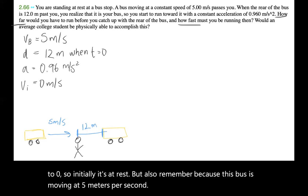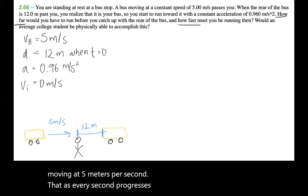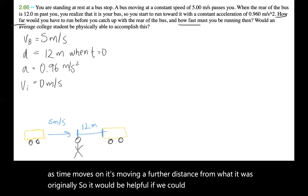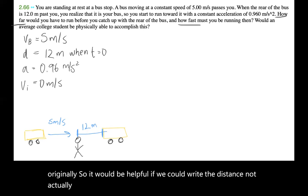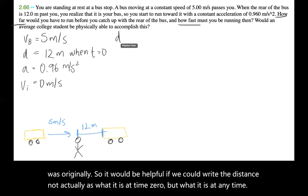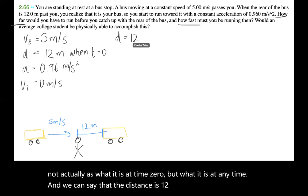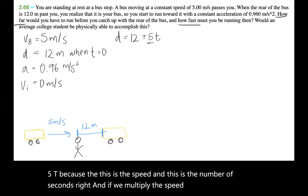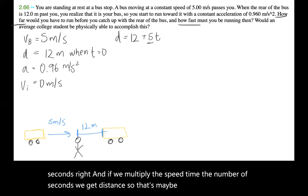But also remember, because this bus is moving at five meters per second, as every second progresses this bus is moving five meters. So as time moves on, it's moving a further distance from what it was originally. So it would be helpful if we could write the distance not actually as what it is at time zero, but what it is at any time. And we can say that the distance is 12 meters at time zero plus 5t, because the speed times the number of seconds gives us distance. So that's going to be the total distance at any time t.